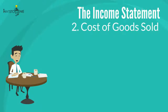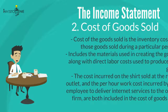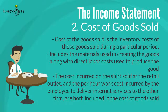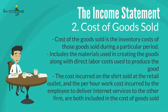Two: cost of goods sold, also called COGS. Cost of goods sold is the inventory cost of those goods sold during a particular period. This amount includes the materials used in creating the goods along with direct labor costs used to produce the good. The cost incurred on the shirt sold at the retail outlet and the per-hour work cost incurred by the employee to deliver internet services to the other firm are both included in the cost of goods sold.